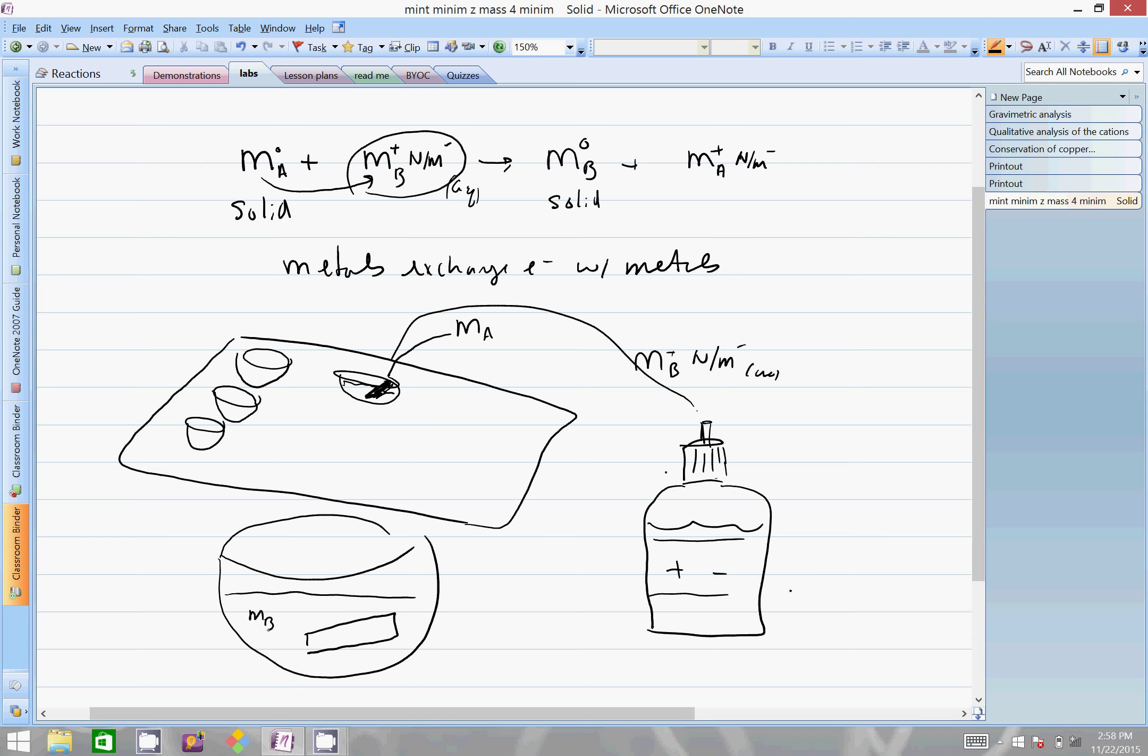Metal B plus could roam up to the piece of metal, and then as the exchange takes place, metal A would enter the solution. Metal B would just sort of become a solid onto the piece of metal and coat it a little bit.